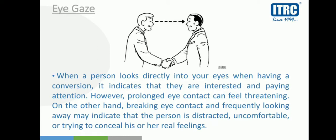However, eye contact can feel threatening. On the other hand, breaking eye contact and frequently looking away may indicate that the person is distracted. Sometimes, if you are listening to someone without eye contact, then the sender will think that you are distracted. Or he will think that his receiver is uncomfortable, and he will not be able to see the receiver's real feelings.